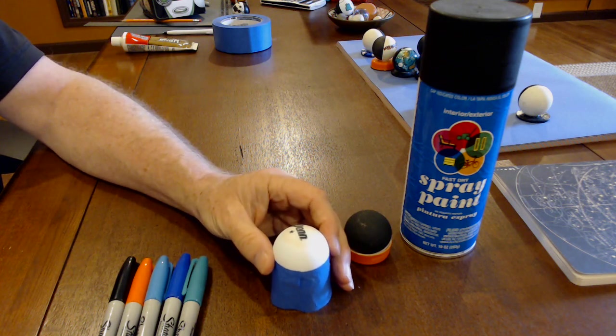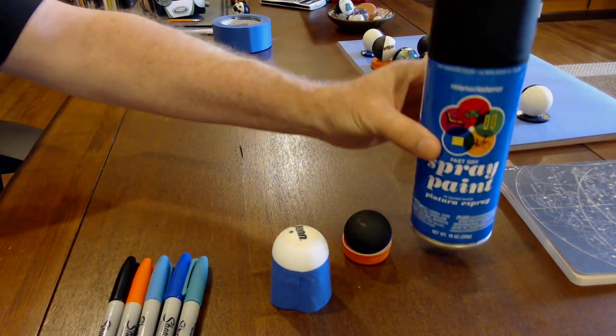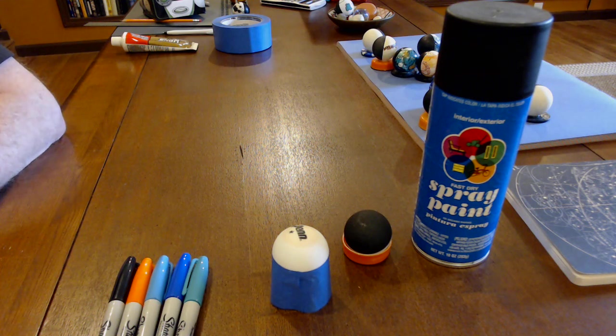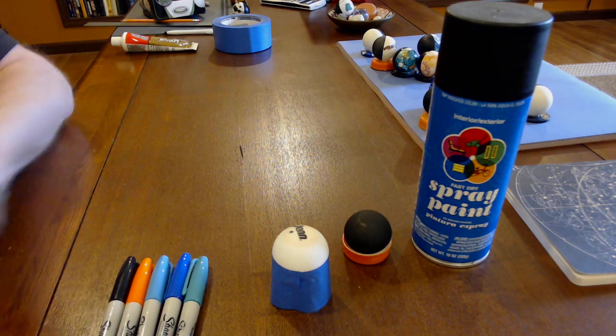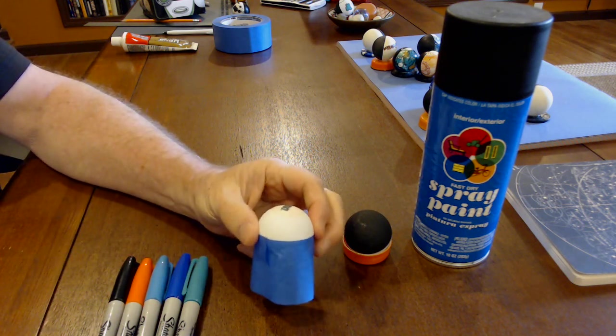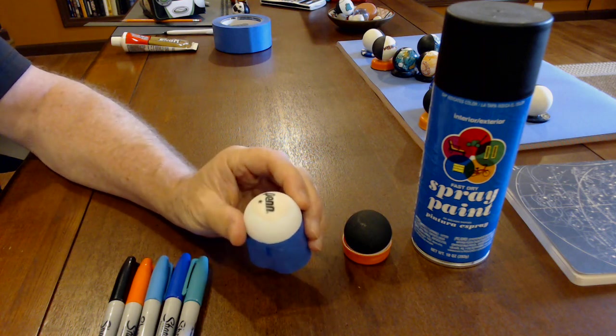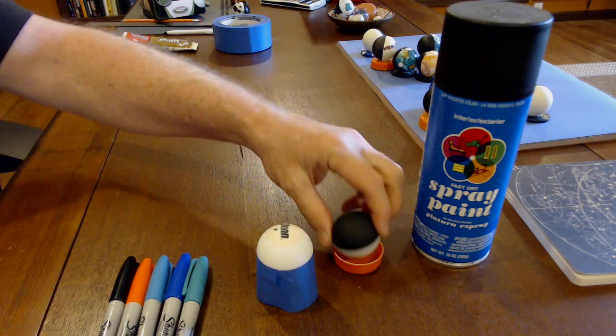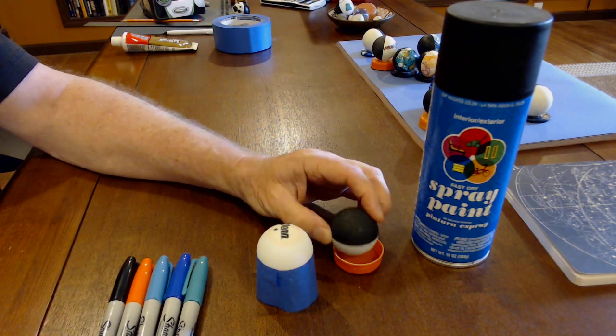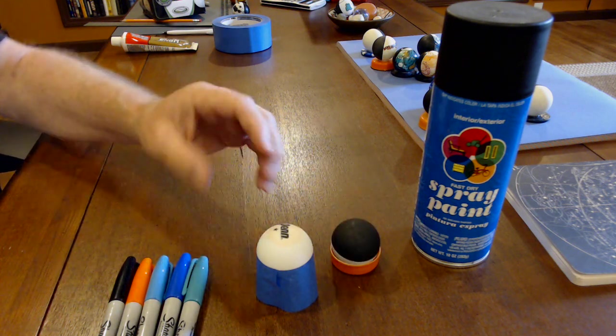And when you paint the back of these black, flat black spray paint, it dries very quickly, 10 or 15 minutes, and you can give it a couple of coats and then voila, you have a whole set of half black, half white ping-pong balls for your students to work with.